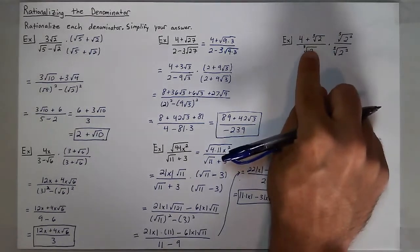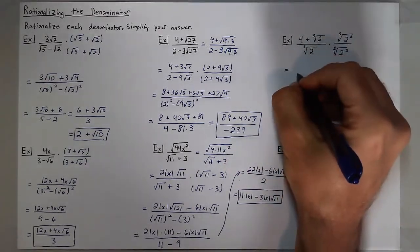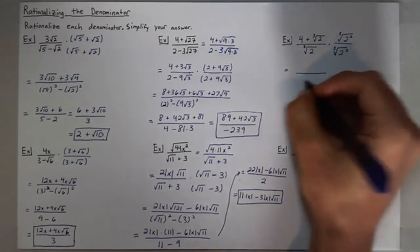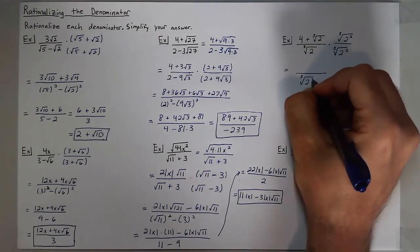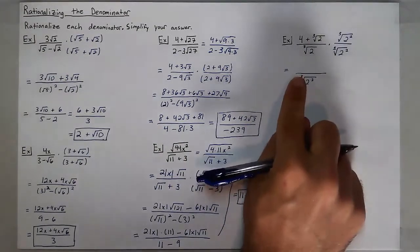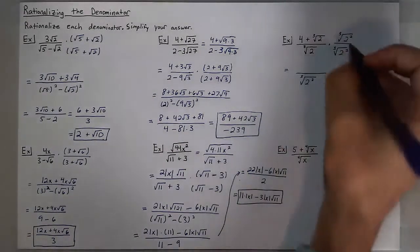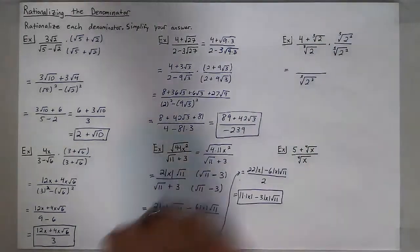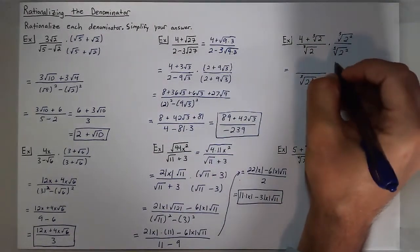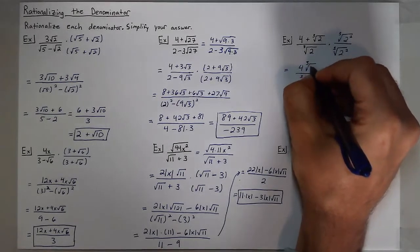I'll get 2 to the first times 2 squared, which is the cube root of 2 cubed — a perfect cube — thus helping me get rid of that radical in my denominator. In my numerator I'll distribute, so 4 times the cube root of 2 squared gives 4 cube roots of 4.